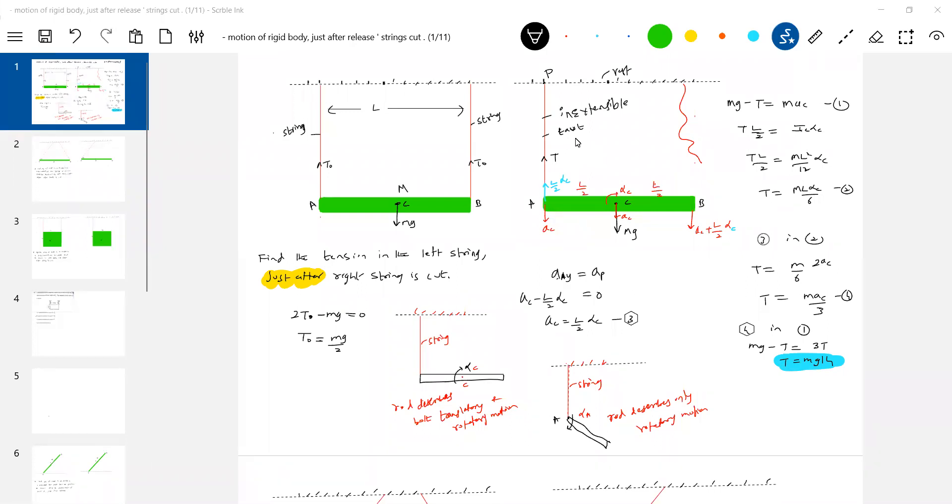Equation two, the tension. This is T, this is L by 2. So torque T into L by 2 is equal to ML square by 12 into alpha C. Torque T, this is R bar, this is F bar.